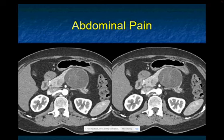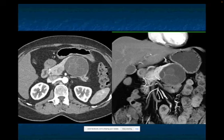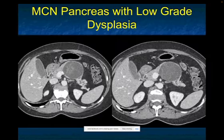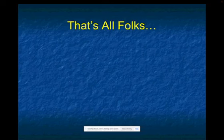Another patient with abdominal pain — this is more classic: a body of pancreas lesion with thick septations and wall. This is a good example of a classic MCN. You can argue high grade versus low grade dysplasia, but MCNs over 4 cm are always going to be resected due to concern for malignancy. Fortunately for this patient surgery was in time and there was only low grade dysplasia.